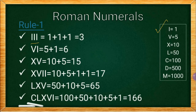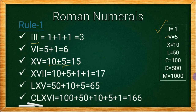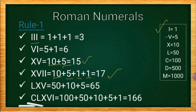Next, VI: V is 5 and I is 1, so VI means 5 plus 1, which equals 6. We are adding here. XV: X means 10 and V is 5, so XV means 10 plus 5, which is 15. XVII: X is 10, V is 5, and II means 1 plus 1, so 10 plus 5 plus 1 plus 1 equals 17.